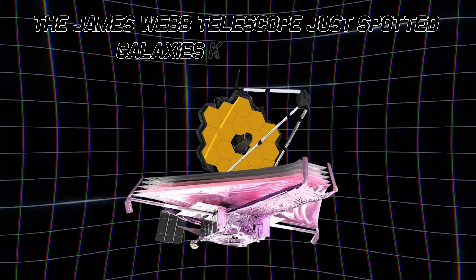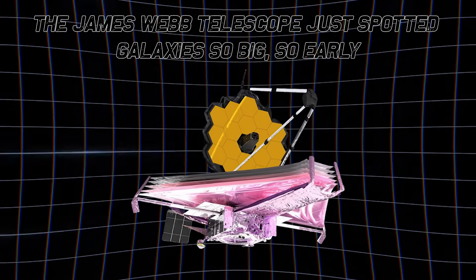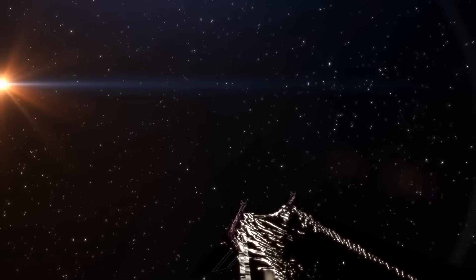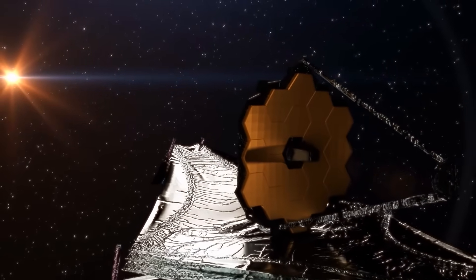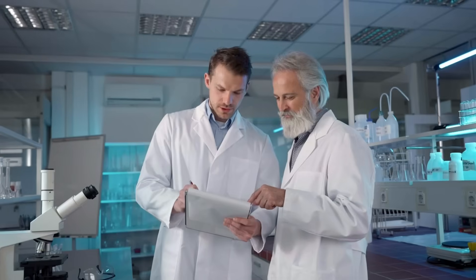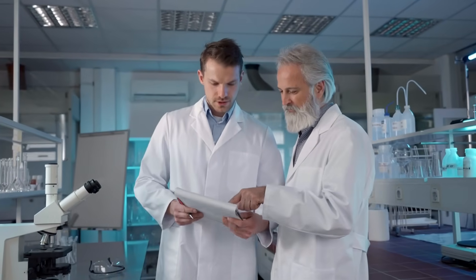The James Webb Telescope just spotted galaxies so big, so early, they shouldn't even exist if the Big Bang timeline is right. This is the kind of space drama that keeps scientists up at night, because it's rewriting what we thought we knew about the universe.